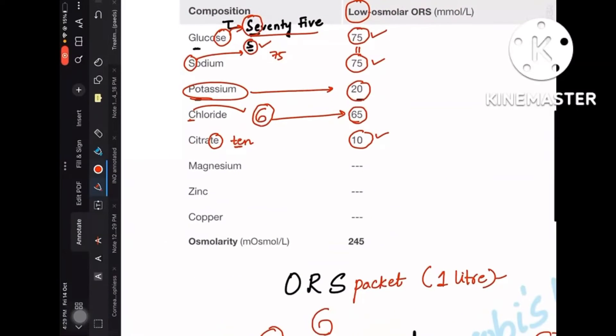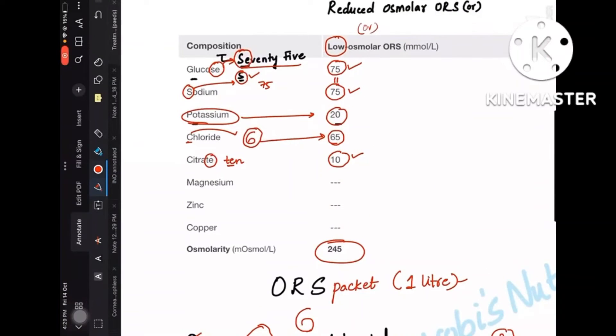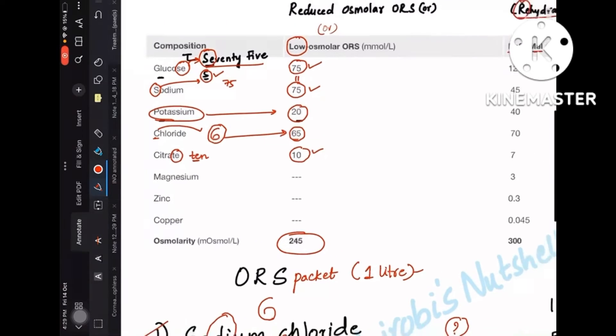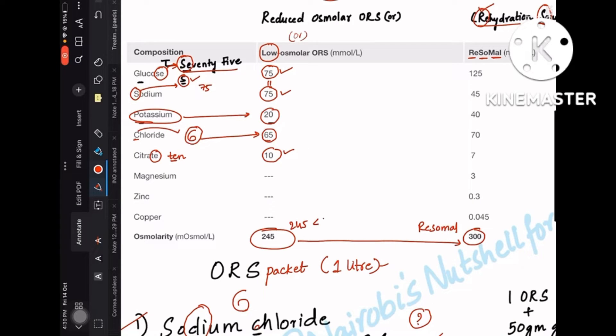So total together you should get a value of 245—that is low osmolar ORS, 245. It is called low osmolar when you compare it with the adjacent one, which is 300, that is for ReSoMal. So when you compare with ReSoMal, the normal ORS, that is reduced osmolar ORS, is low osmolar 245, which is less than 300.